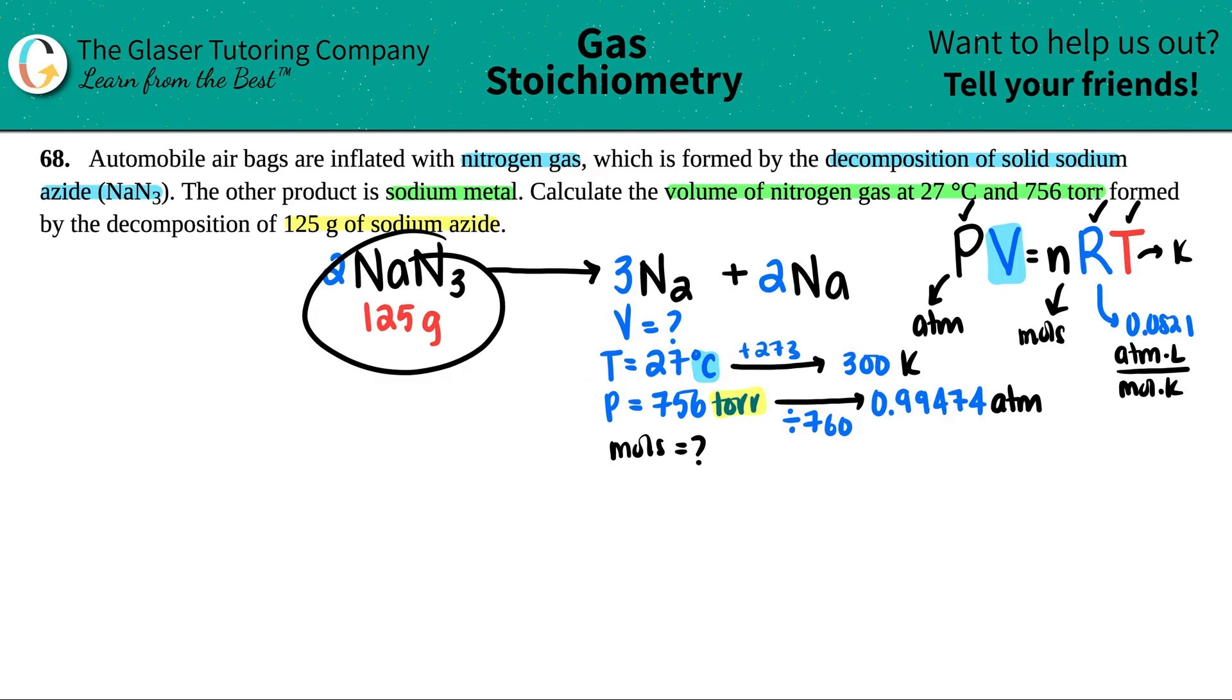This is now going all the way back to stoichiometry, in which I have a mass of one compound and I use my balanced equation to go to the other compound. In this case, we have 125 grams of NaN3, and we want to go to the moles of N2. Remember, the only way that you can convert from one compound to another is through the unit of moles. So I can't do this in one shot. I have to bring this into moles of NaN3, and then from there I can get my moles of N2.